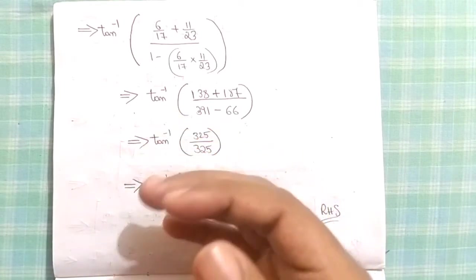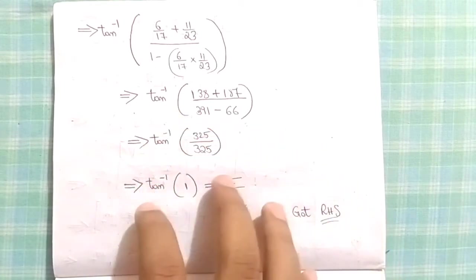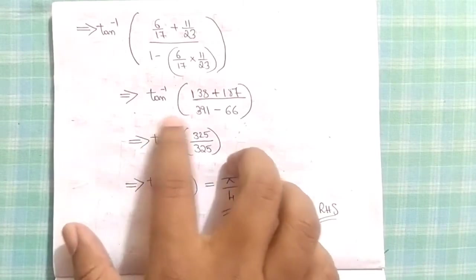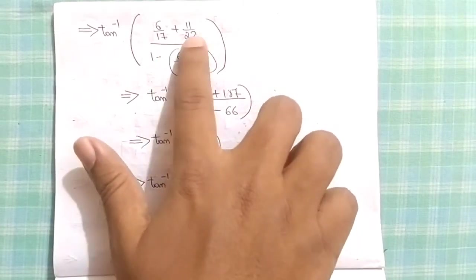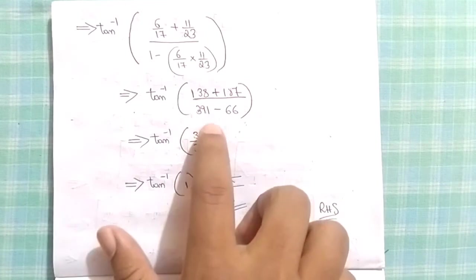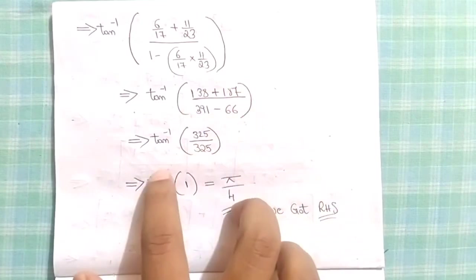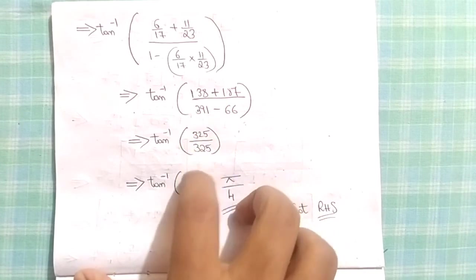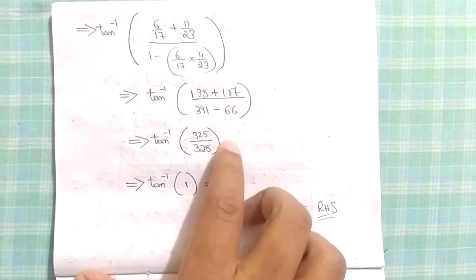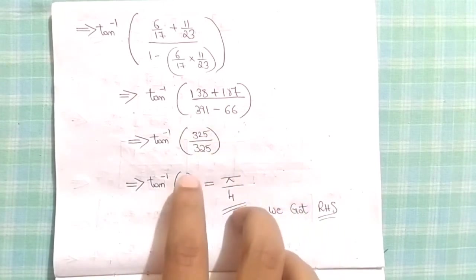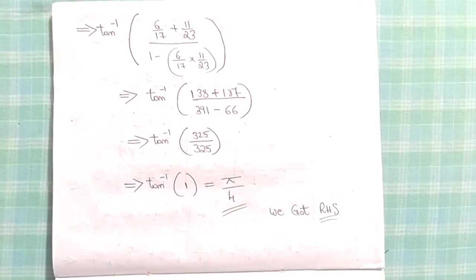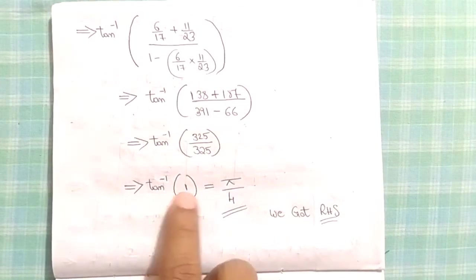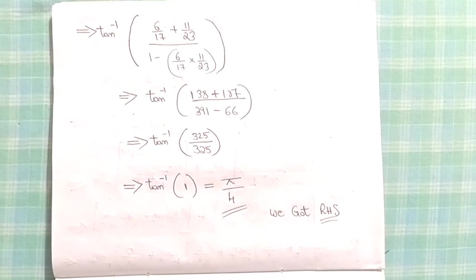On solving this, take LCM of the numerator and denominator. Simplifying this will give you 325/325. Same numbers cancel each other: tan inverse of 1, which gives you π/4. You know tan inverse of 1 is π/4. We got our RHS.